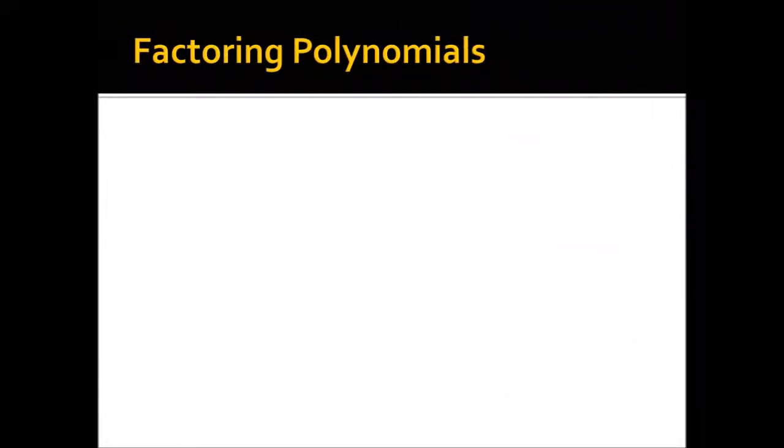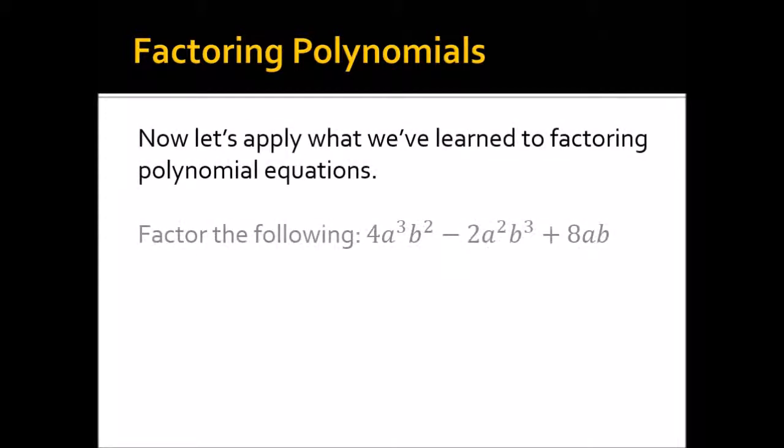Alright. So now let's really apply this to the types of questions that you'll see on homework and tests and quizzes. So let's say they give you the following: 4a³b² - 2a²b³ + 8ab. And they ask you to fully factor this. So what we're going to do is we're going to take each term and break it up into its prime factorization. So the first term, you see I wrote it as 2·2 and then times a·a·a·b·b and then 2·a·b·b·b and then 2·2·2·2·a·b.